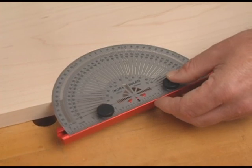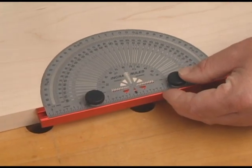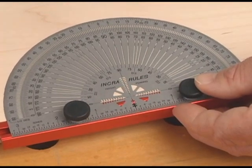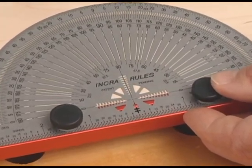The red T-bar ensures exact placement along the edge of your work, while the view window makes it easy to find and align with your starting point.